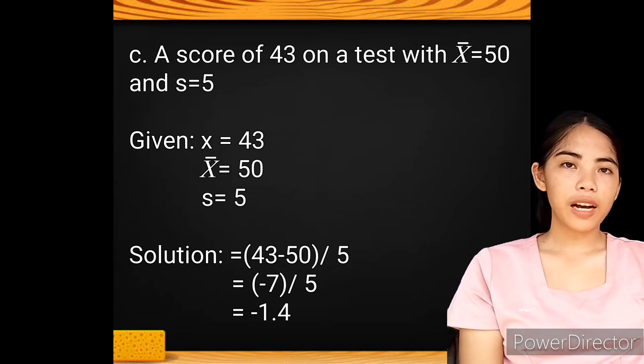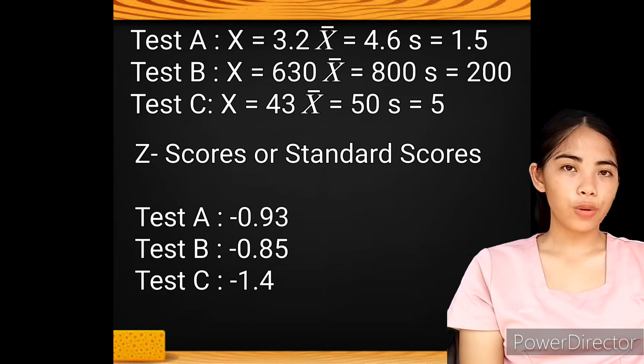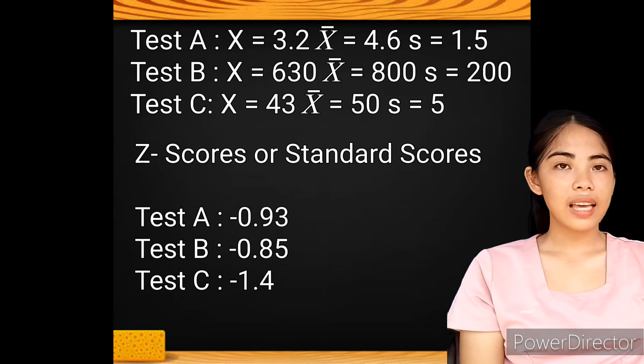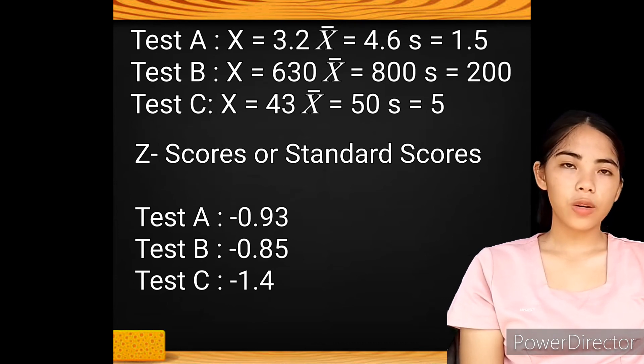So the answer for number 5 is letter B because the score for test B is relatively highest among the other scores. The score of 3.2 in test A is negative 0.93 standard deviations below the mean, while the score of 630 in test B is negative 0.85 standard deviations below the mean, and the score of 43 in test C is negative 1.4 standard deviations below the mean.